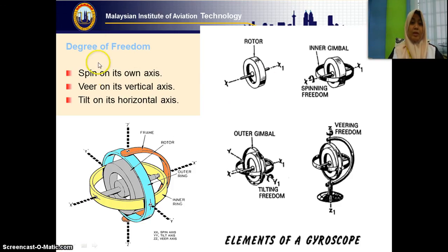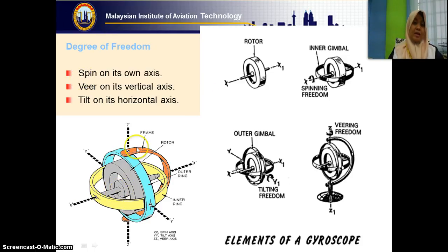You need to know the degrees of freedom — the movement of the gyro. It can move about its own spin axis. We also have the vertical axis — this is one pivot point — and also the horizontal axis, which is another pivot point.